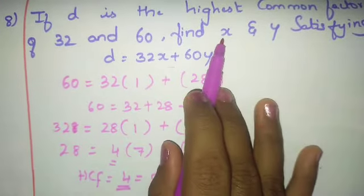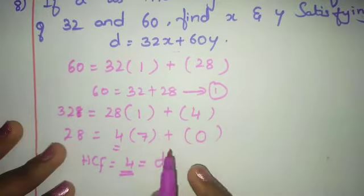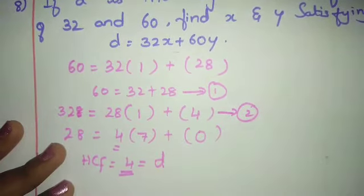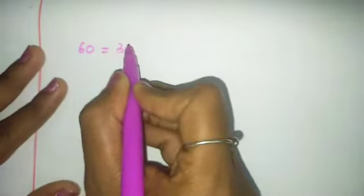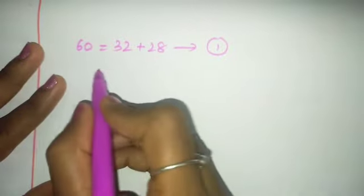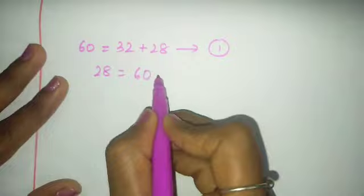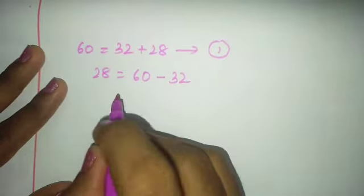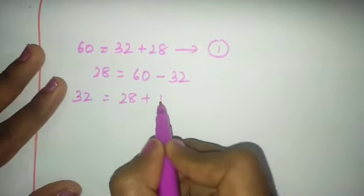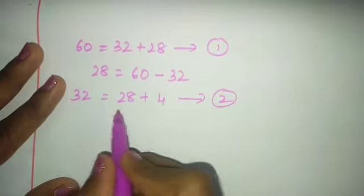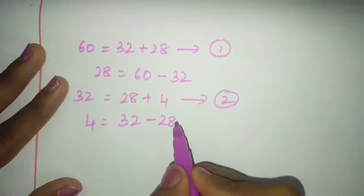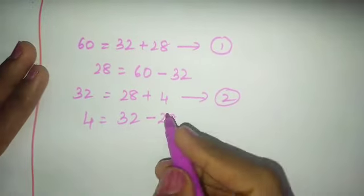Now use back-substitution to find x and y. From equation 1: 28 = 60 − 32. From equation 2: 4 = 32 − 28. This is equation 2. Rearranging: 4 = 32 − 28.